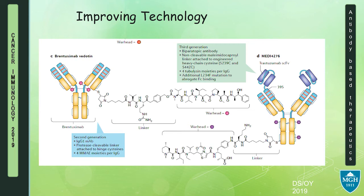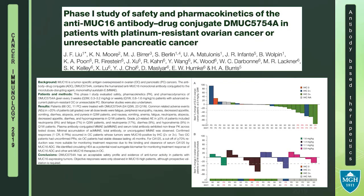We've spent a lot of time looking at all of these individual components and improving them to get better and better ADCs. To give some specific examples in the GYN space, we've studied DMUC5754A, one of the earlier ADCs used in ovarian cancer. It's a MUC16-targeting drug — an antibody conjugate. What's important to note is that the degree of expression of your antigen or your target matters.